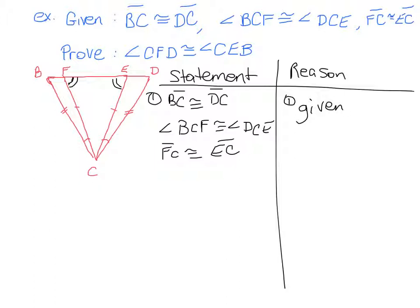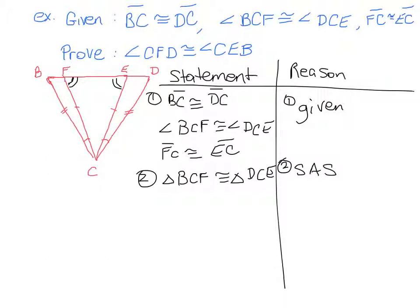We could have broken it up into three given pieces of information or lump it together — it doesn't really matter. Now, according to the side-angle-side postulate, if we have two sides and the angle in between congruent to two sides and the angle in between, that is enough to tell us that our triangles are actually congruent. So the next statement is that triangle BCF is congruent to triangle DCE, and the reason is the side-angle-side postulate — SAS for short.